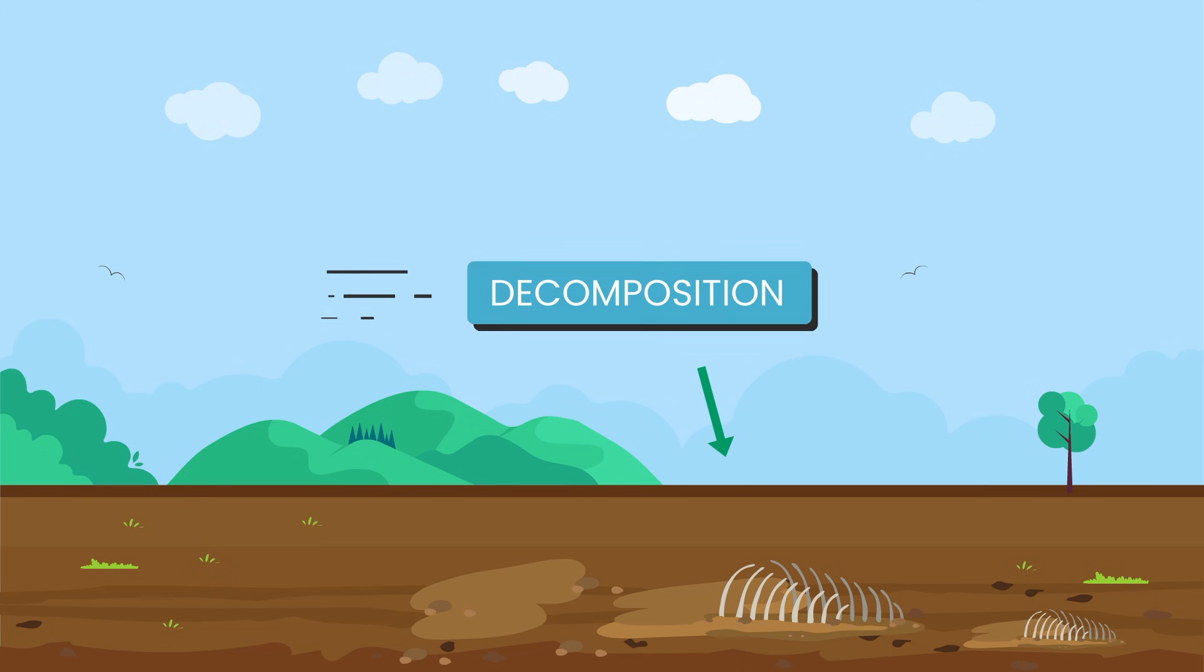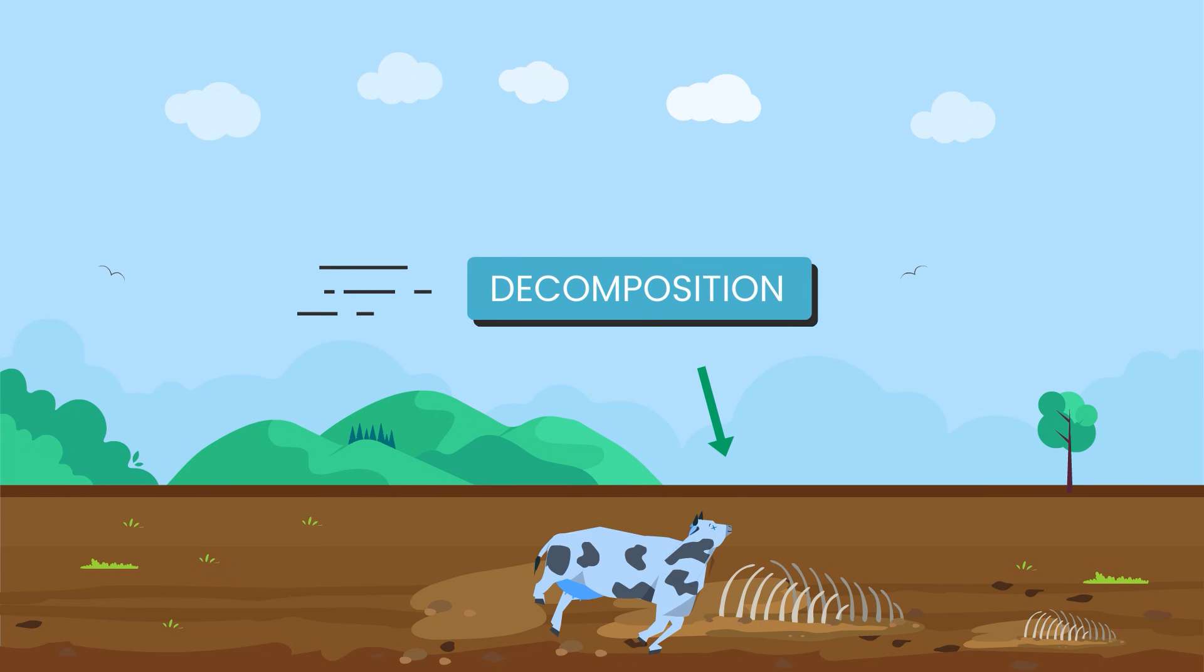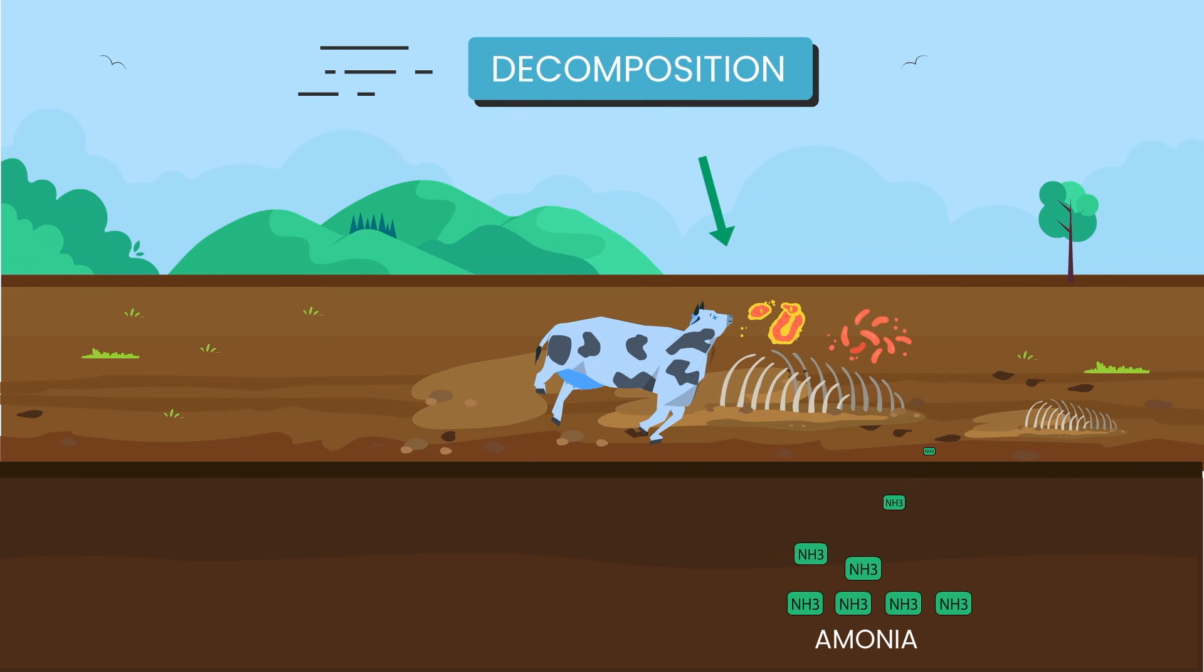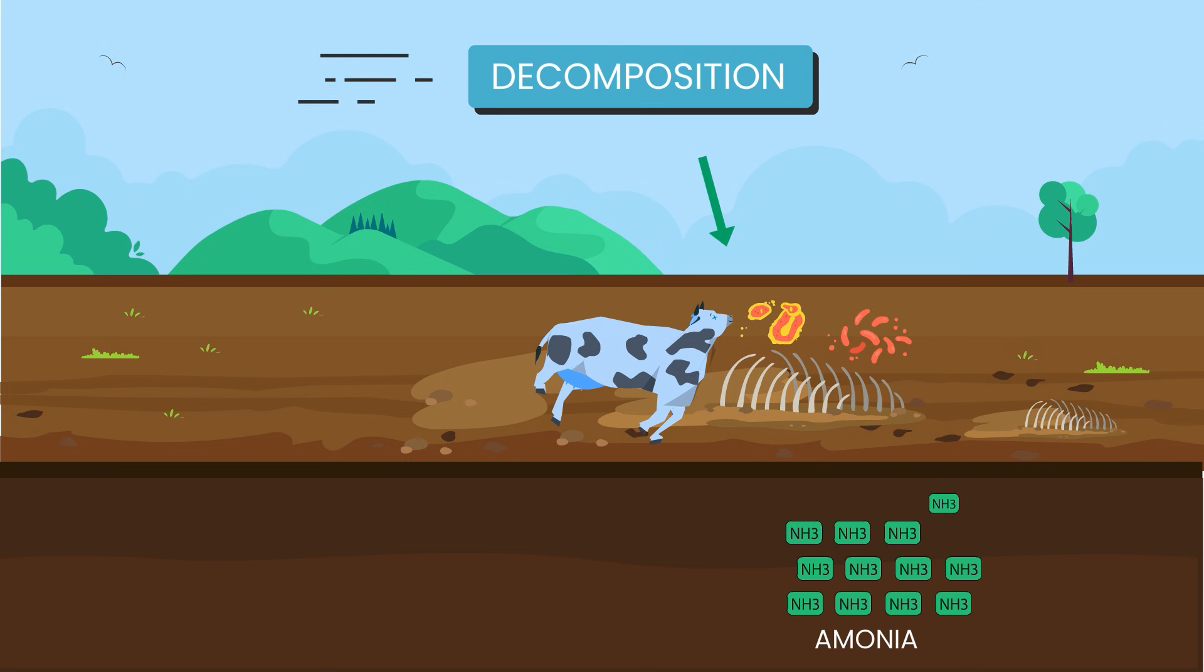Third stage, decomposition. After plants and animals die, tiny organisms like bacteria and fungi break down their bodies. This process releases nitrogen back into the soil as ammonia.